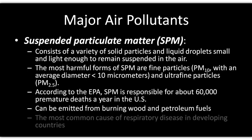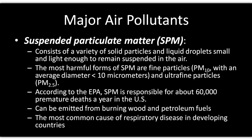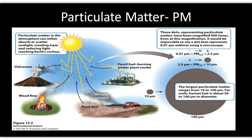Suspended particulate matter (SPM) has many sources — cars, road dust, and volcanoes. The two primary categories are PM10 and PM2.5 (measured in micrometers). PM2.5 particles are extremely small and can get lodged in the lungs, causing damage. Lead is one example: leaded gasoline was phased out because lead particulates from tailpipes attach to road dust, get inhaled, and cause harm within the body.